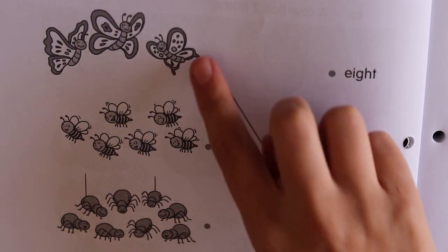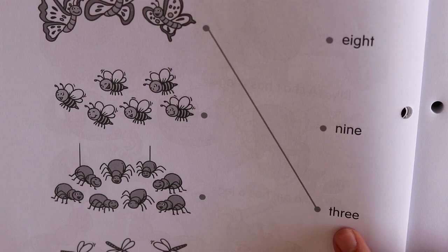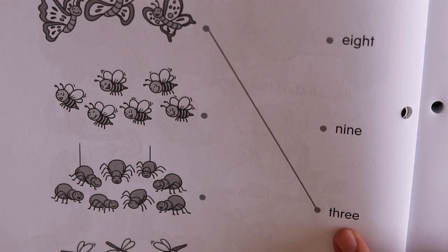And they drew a nice straight line to the three, the word three. Okay, use a ruler.